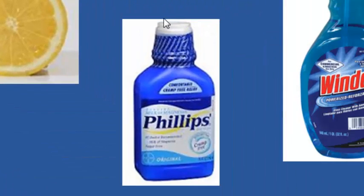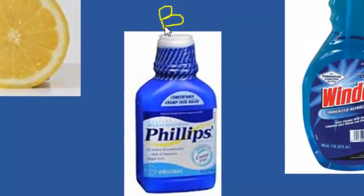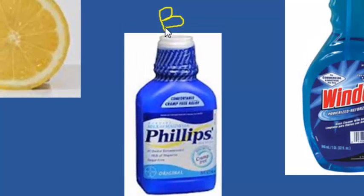Milk of Magnesia — this might be one of the harder ones. That is a base. Milk of Magnesia actually contains magnesium hydroxide. The magnesium hydroxide doesn't dissolve in water, so it's actually a suspension of magnesium hydroxide. It looks like milk, but it's magnesium hydroxide — and that makes it a base because of the hydroxide in the compound.